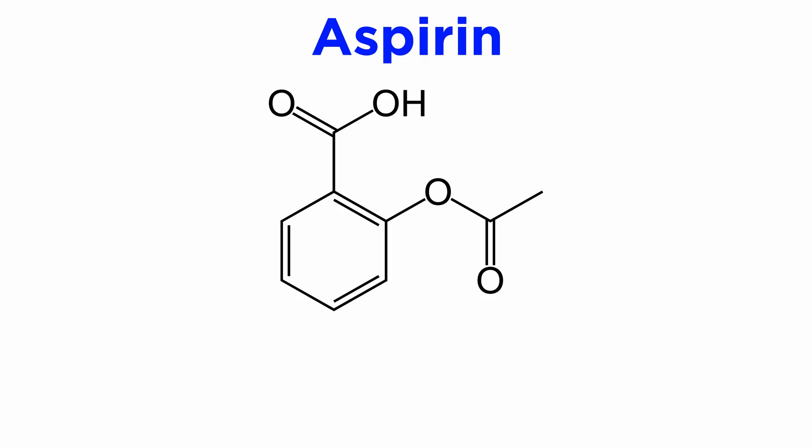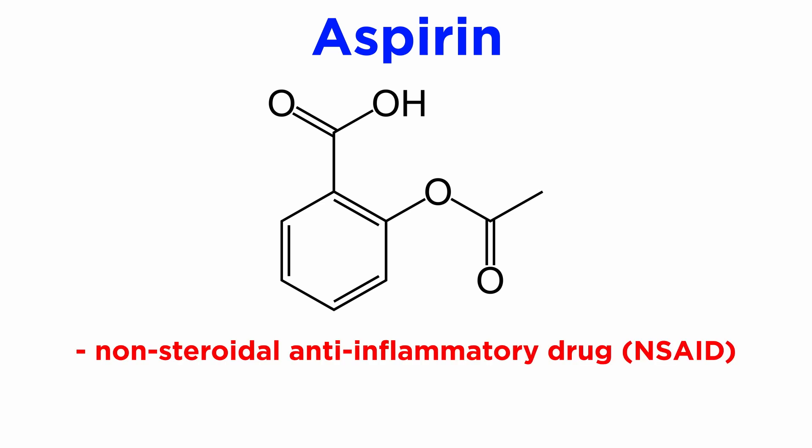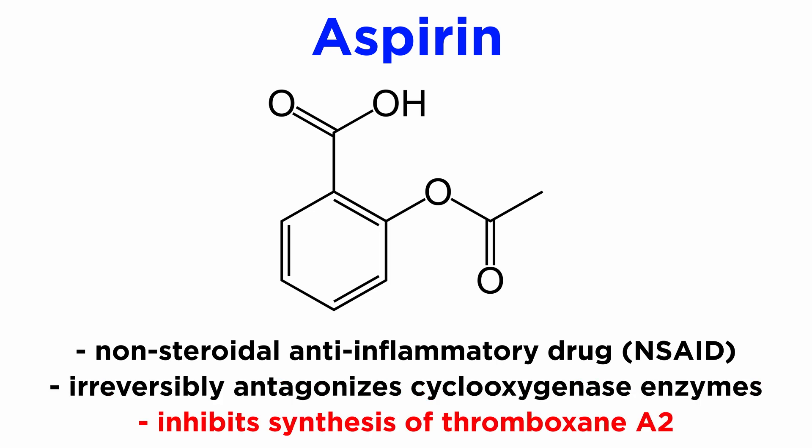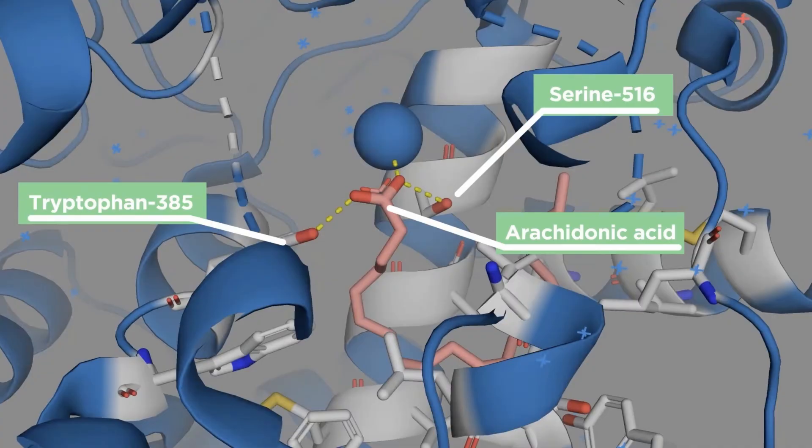Aspirin, which we have discussed extensively in a previous tutorial, is an NSAID, or non-steroidal anti-inflammatory drug, that irreversibly antagonizes cyclooxygenase enzymes and inhibits the synthesis of thromboxane A2 from its arachidonic acid precursor.